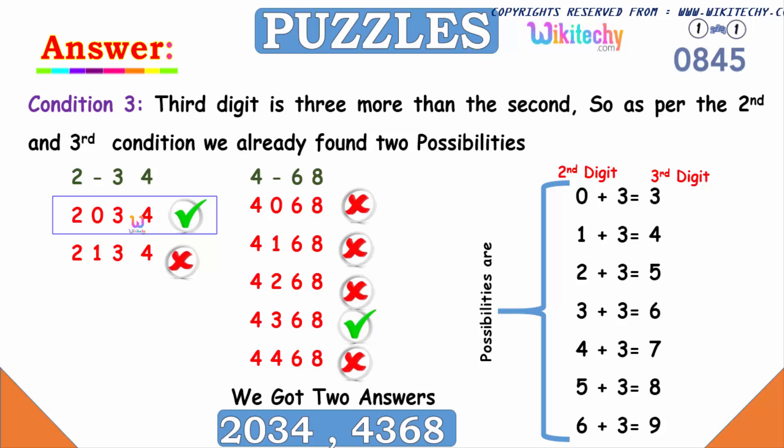So this one more than three. And now for four, zero, four, six, eight, I'll put a combination of zero, one, two, three, four. So this is the only one which is satisfying the condition of the third digit. It's three more than the second. So the possibility is it can be four, three, six, eight or two, zero, three, four, and that's the answer.